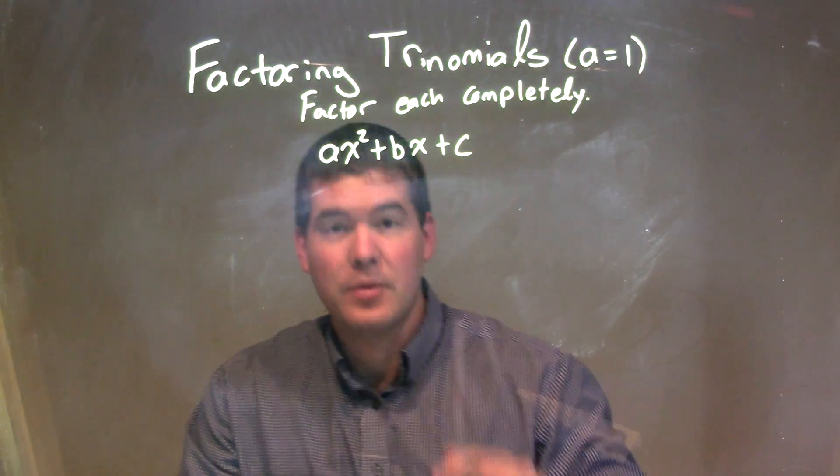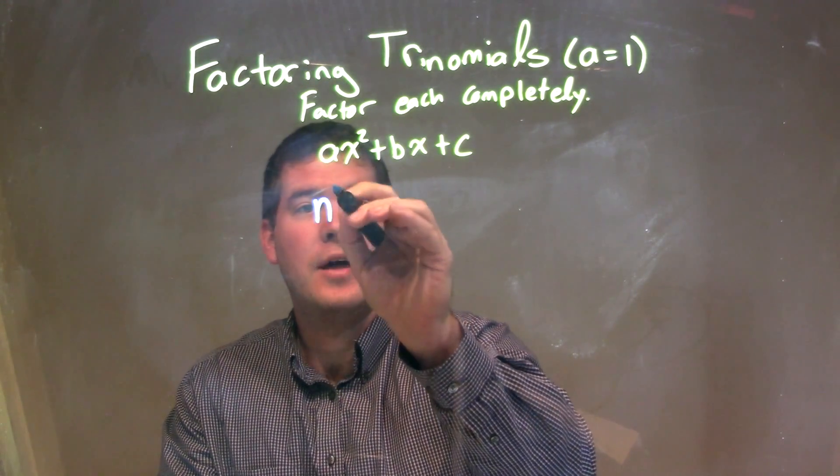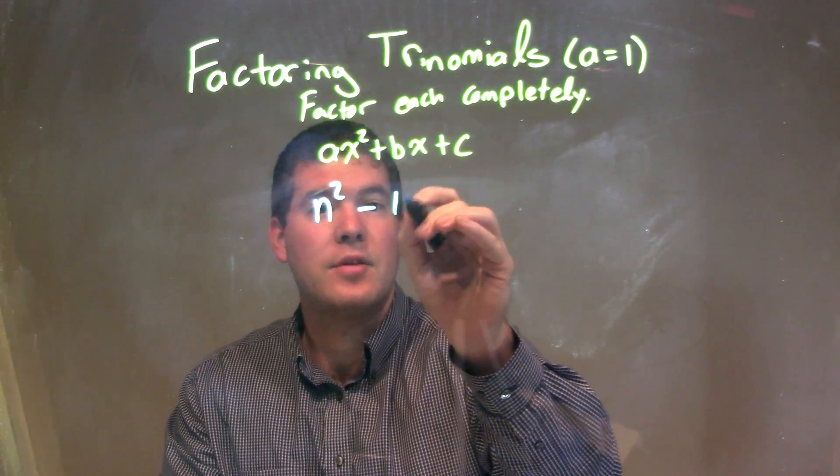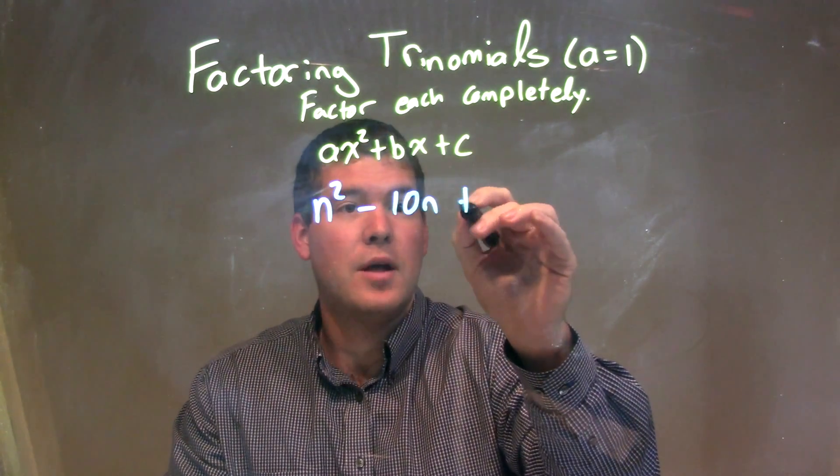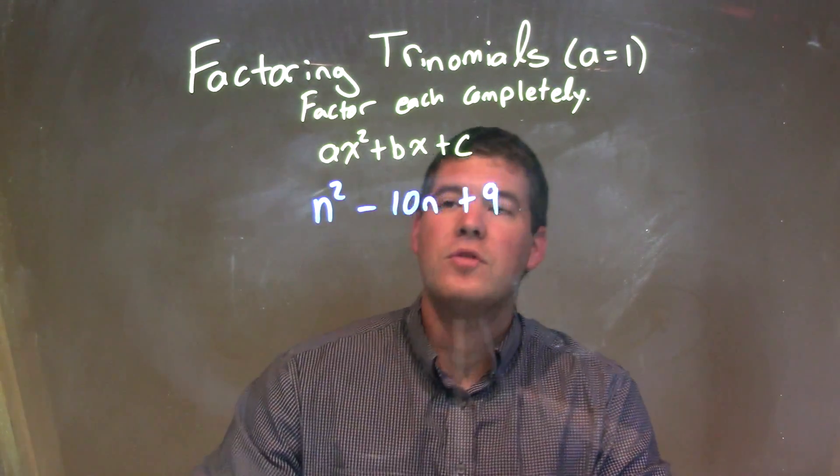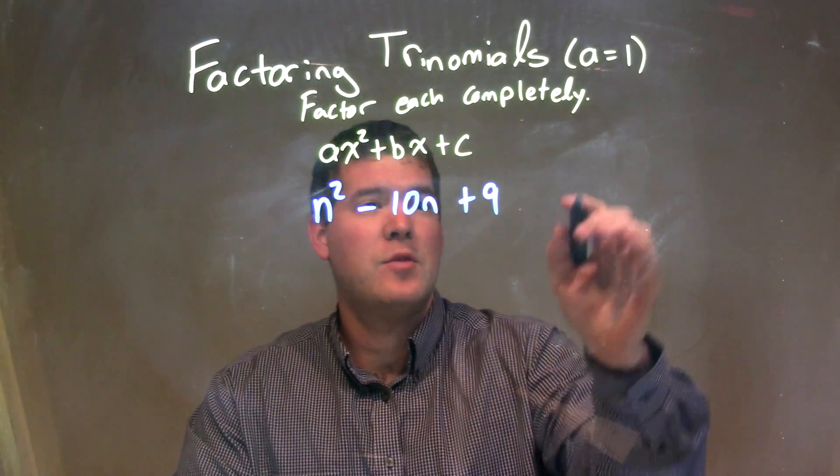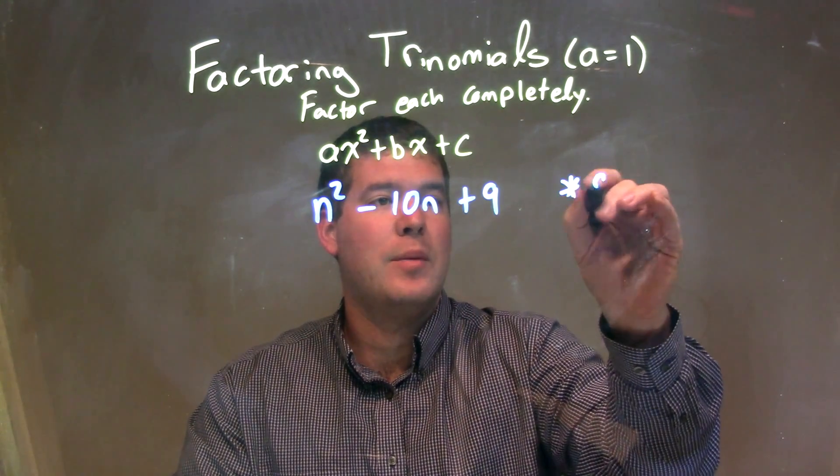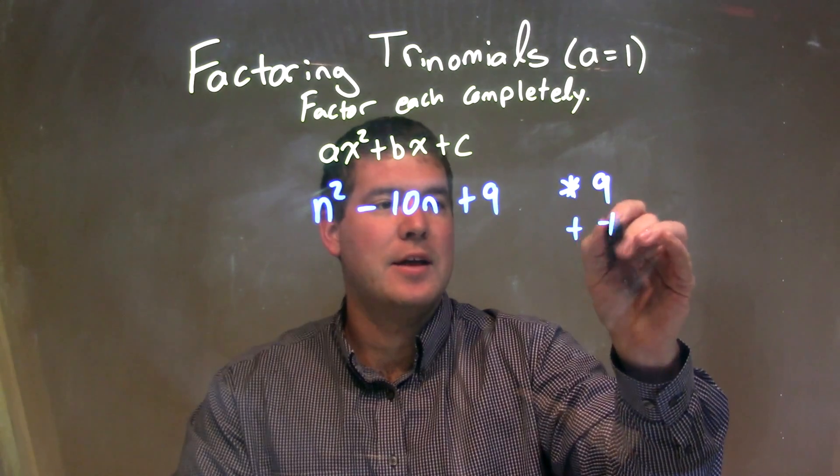So if I was given this trinomial, n squared minus 10n plus 9. Well, since our a value here is 1, I can ask myself a question. What two numbers multiply to be a 9, but add to be a negative 10?